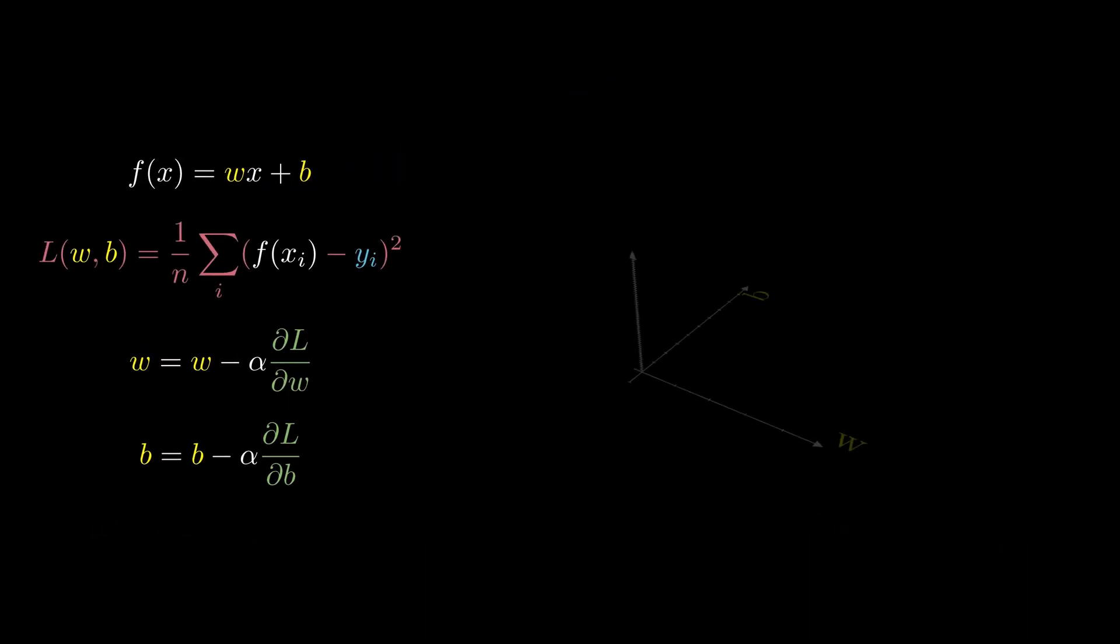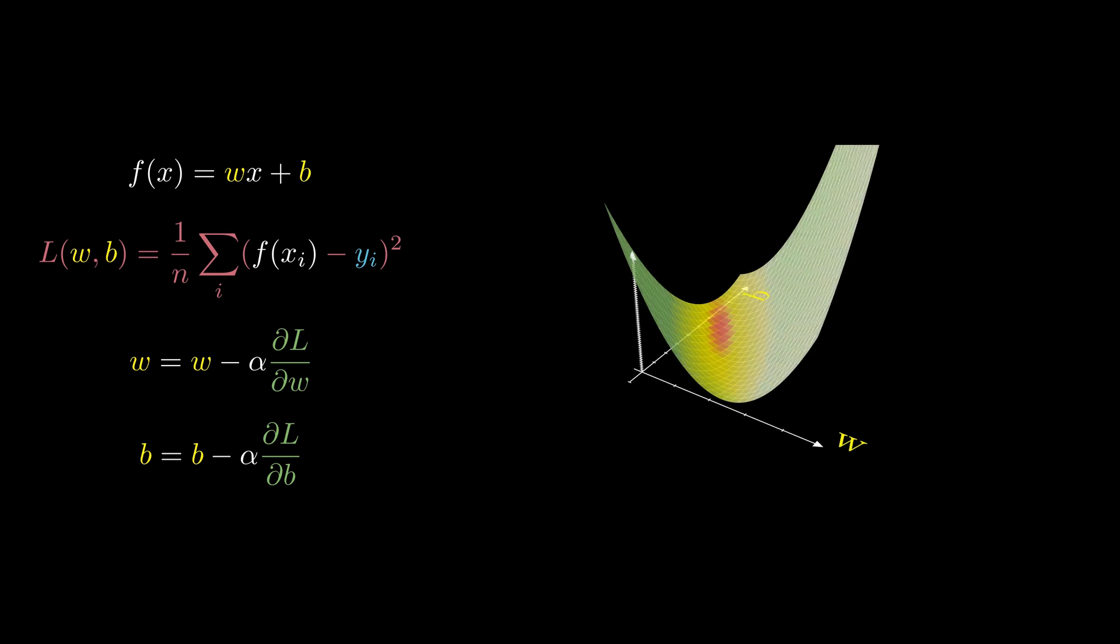Everything starts by randomly selecting a pair of w and b values. Next, evaluate the cost function for the selected pair and then update these w and b values using gradient descent algorithm. Now evaluating the cost again, you can see its value dropping. As we keep doing this again and again, we notice the cost dropping after each iteration.